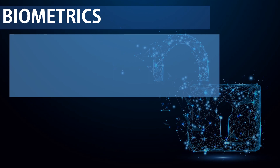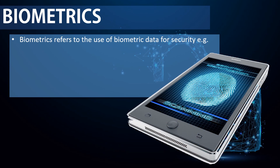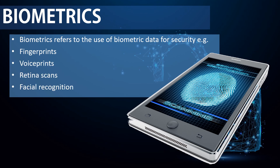Biometrics refers to the use of biometric data for security purposes. This includes things like fingerprints, voice prints, retina scans, and facial recognition. These technologies are commonly used to secure mobile phones. These methods work in a similar way, so let's look at fingerprints as an example.